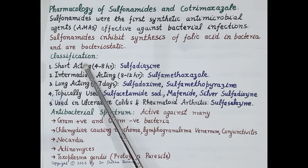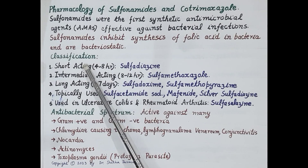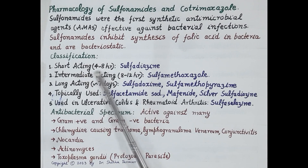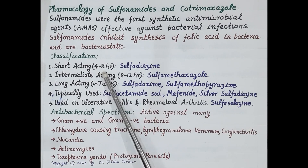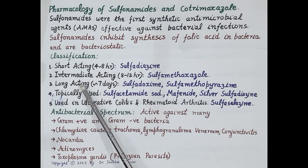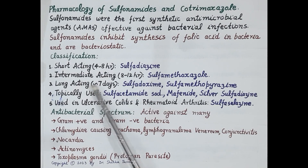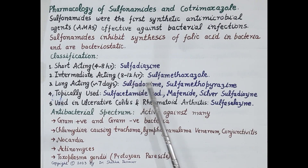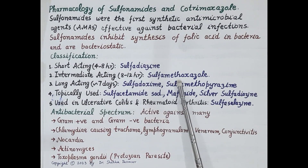Sulfonamides are classified as short-acting with a half-life of 4 to 8 hours — for example, sulfadiazine. Then intermediate-acting sulfonamides with a half-life of 8 to 12 hours — for example, sulfamethoxazole.